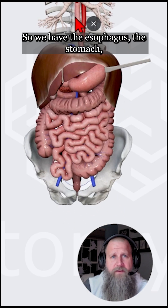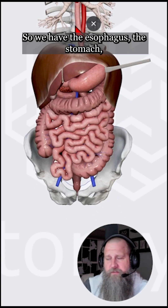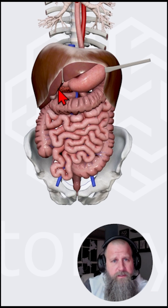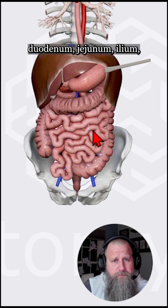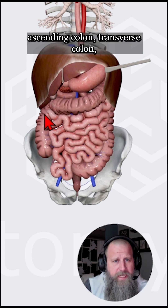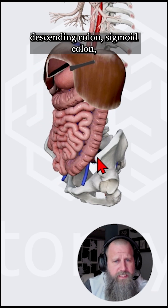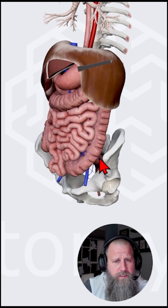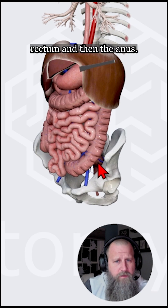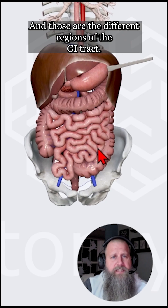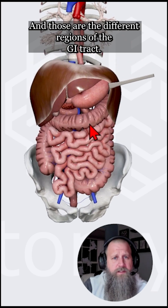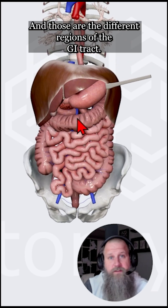So we have the esophagus, the stomach, duodenum, jejunum, ileum, ascending colon, transverse colon, descending colon, sigmoid colon, rectum, and then the anus. And those are the different regions of the GI tract.